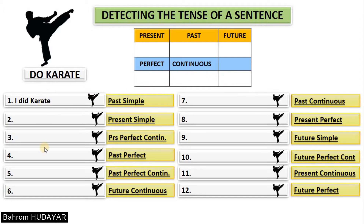I hope you write down 12 different sentences. Once you have written all 12 different sentences, your next task is to detect the tenses of these sentences. Find the tenses of these sentences by using the table here. In the previous part, I showed you how to detect the tenses of sentences. It's really easy.